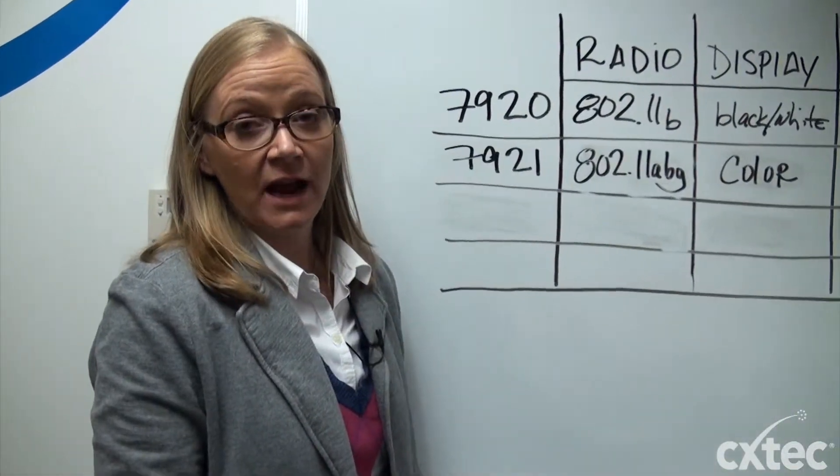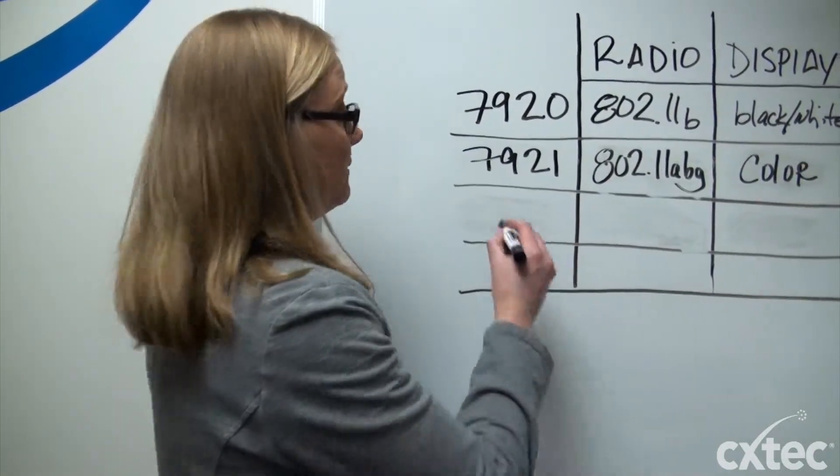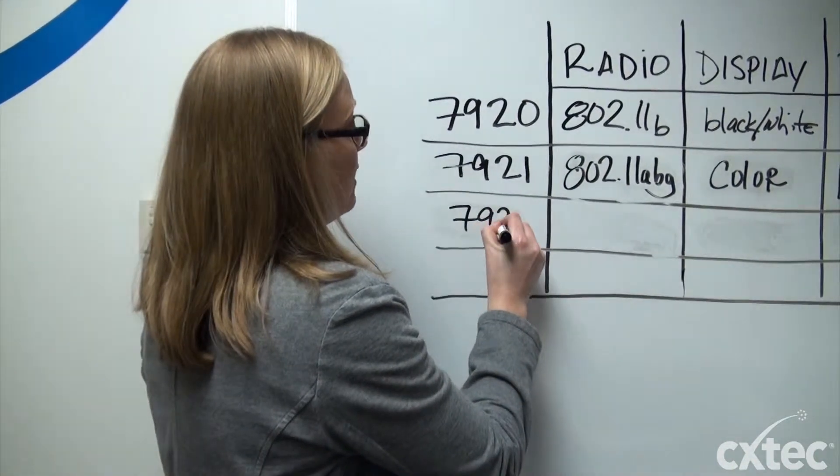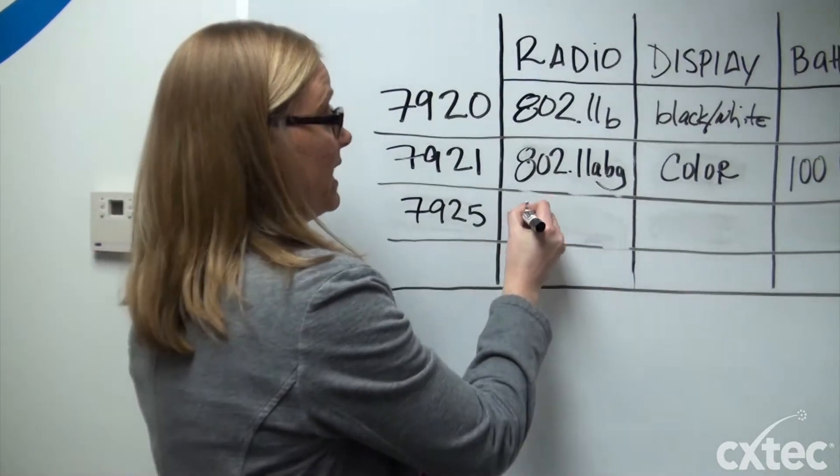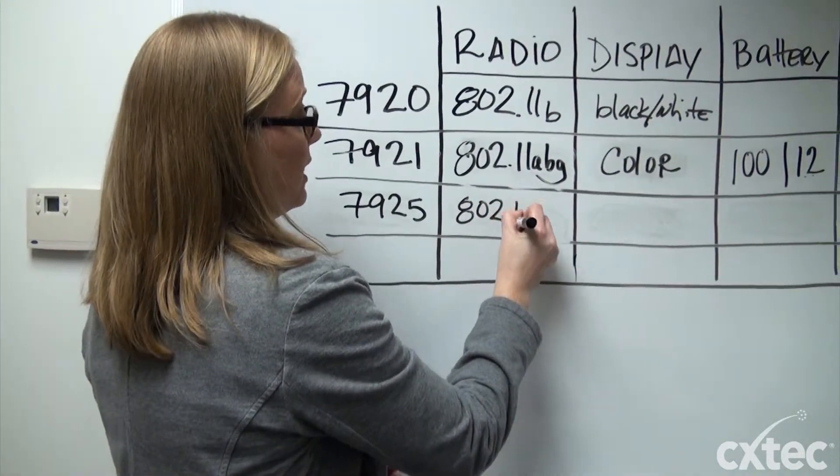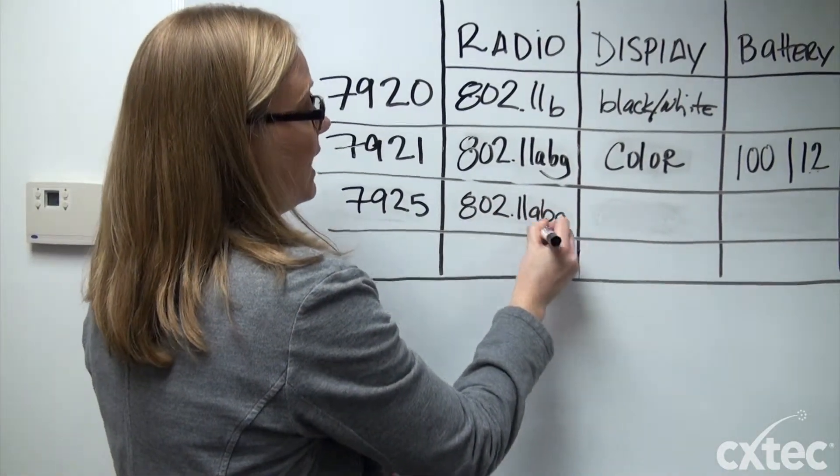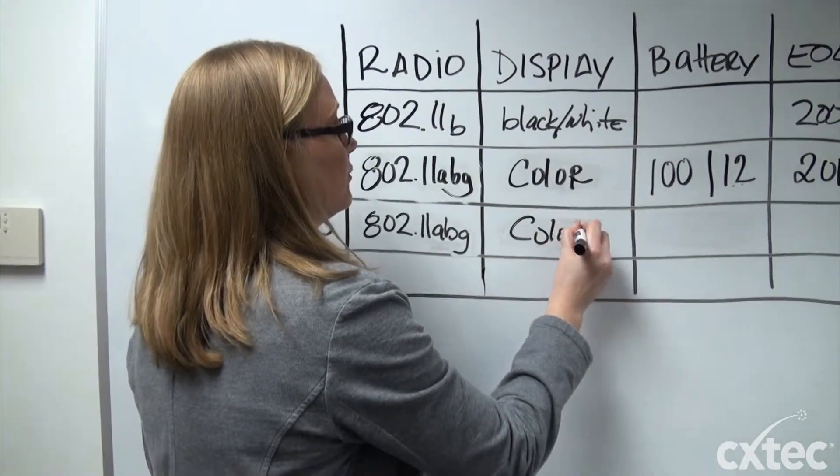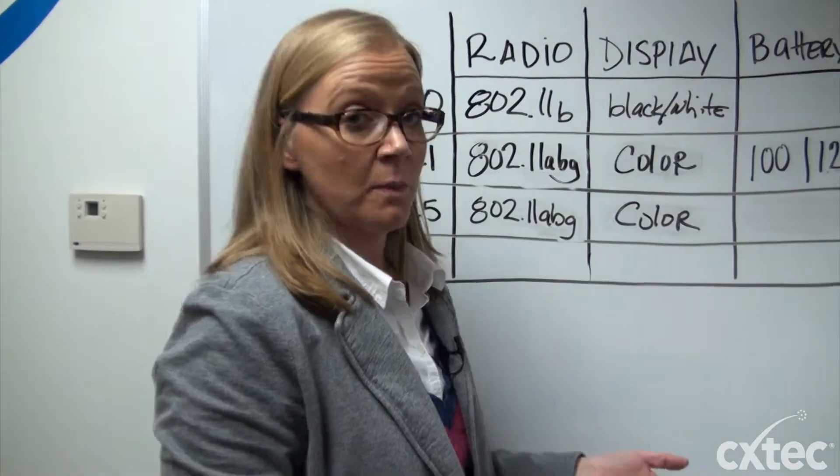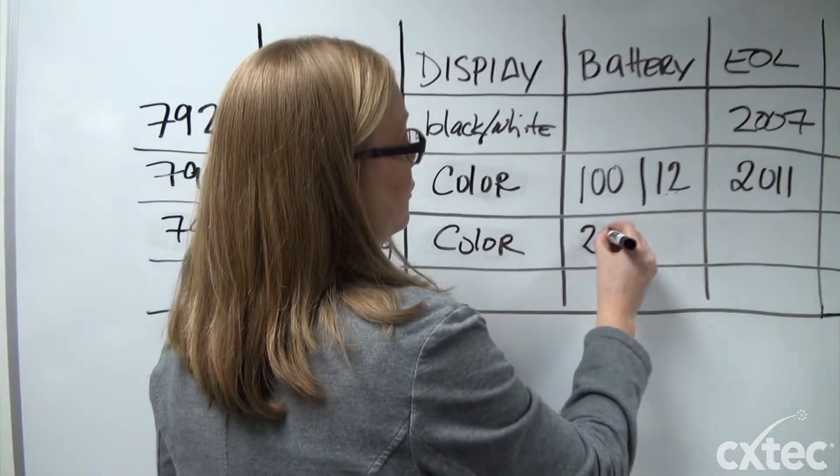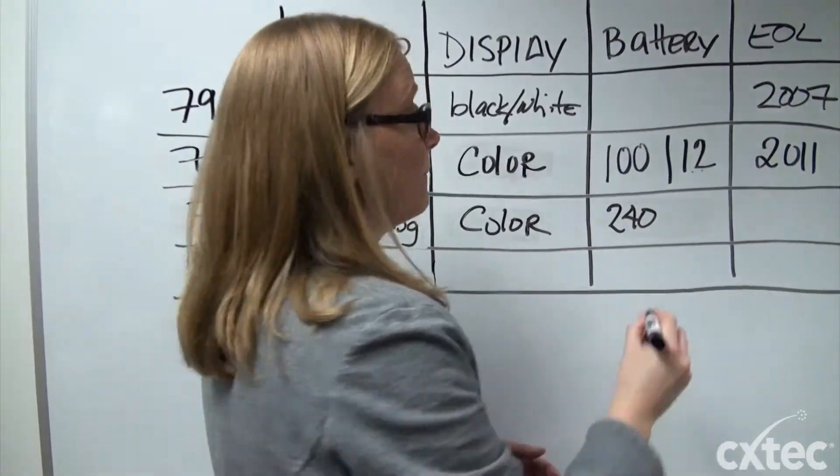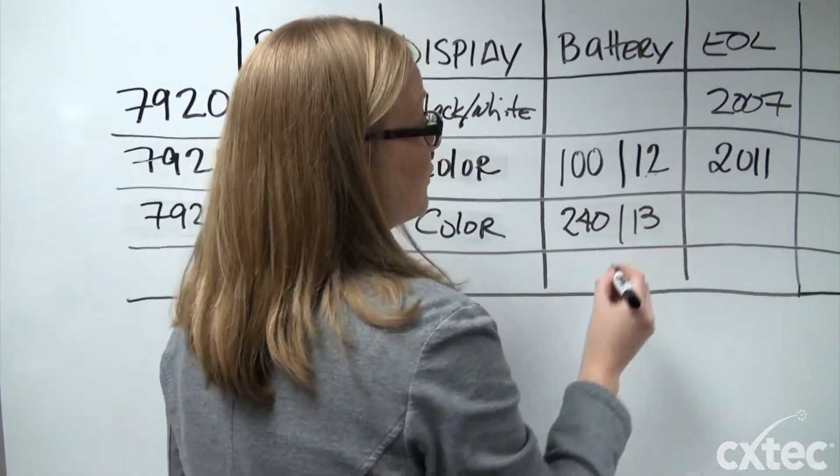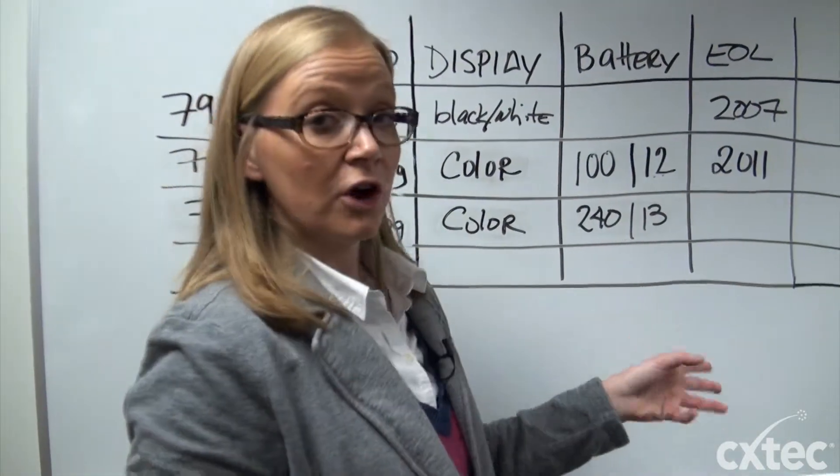After Cisco end of life the 7921 they came out with its replacement, the 7925. This model kept the same support for the radio. So it is 802.11a, b, and g. This still has a color display but again the battery life increased on this model. It went to 240 hours of standby and 13 hours of actual talk time. This model is still current.